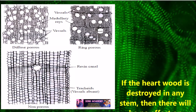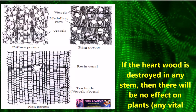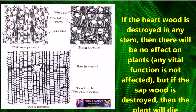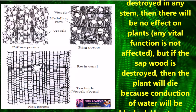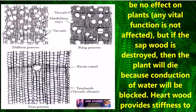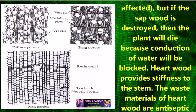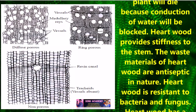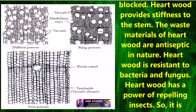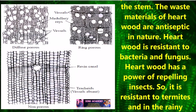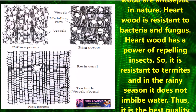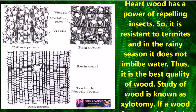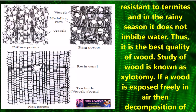Important facts: If the heartwood is destroyed in any stem, there will be no effect on the plant. But if the sapwood is destroyed, the plant will die because conduction of water will be blocked. Heartwood provides stiffness to the stem. The waste material of heartwood is antiseptic in nature. Heartwood is resistant to bacteria and fungus, and has the power of repelling insects, so it is resistant to termites. In the rainy season, it does not imbibe water. Thus, it is the best quality of wood.